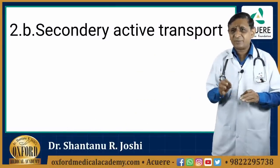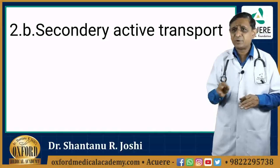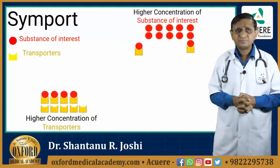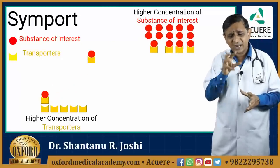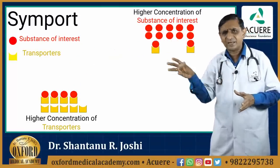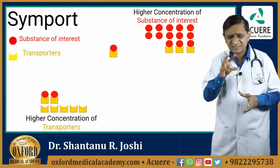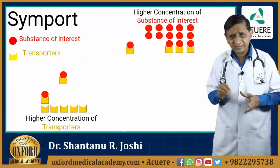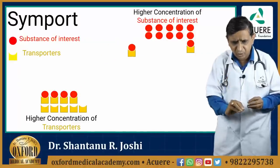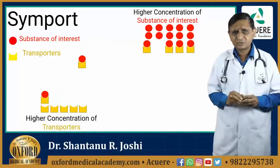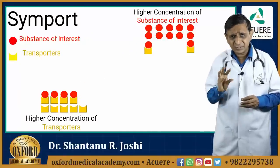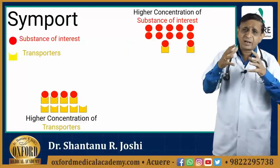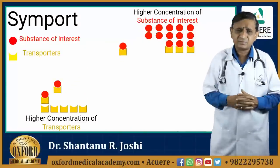Secondary active transport is a transport which depends upon the movement of some other solute. It is divided into symport. In symport, both substrates will move in the same direction. The substance of interest will move from lower concentration to higher concentration, and the helping substance will move from higher concentration to lower concentration. But both are moving in the same direction. That is known as symport.